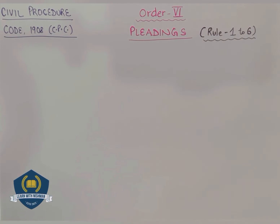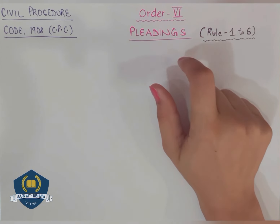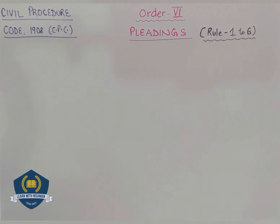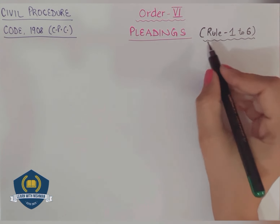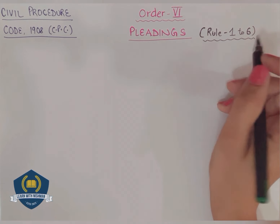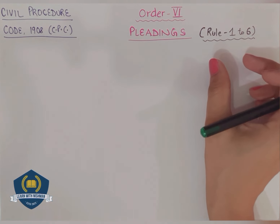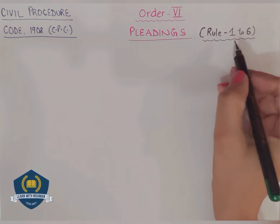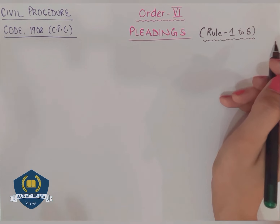Hello everyone, welcome to our channel. As we completed last session's Order 5, today we will continue with Order 6. Order 6 talks about pleadings, and today we are going to cover Rule 1 to 6. In total we have Rule 17, but today we will do 1 to 6 and the rest we will do in the next session.